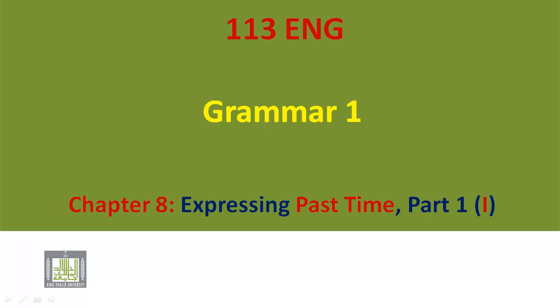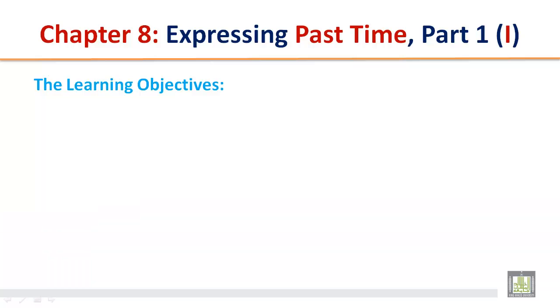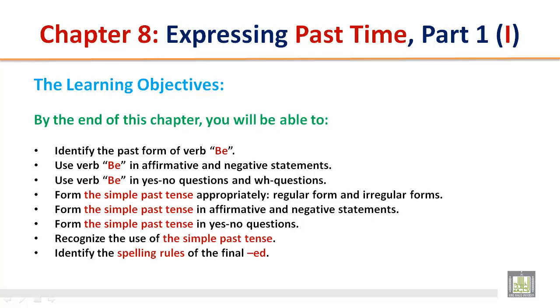English 113 Grammar 1, Chapter 8: Expressing Past Time, Part 1. The learning objectives: by the end of this chapter, you will be able to identify the past form of verb be, use verb be in affirmative and negative statements, and use verb be in yes or no questions and WH questions.